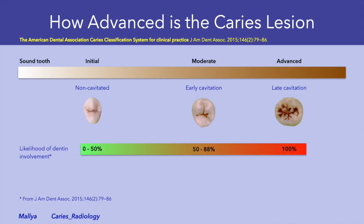Let's review the ADA caries classification system that categorizes caries as initial, moderate, and advanced according to the stage of progression. The initial caries lesion is non-cavitated and involves the enamel and the outer third of dentin. Importantly, up to 50% of such lesions could have involved the dentin, emphasizing the need for imaging to provide information that cannot be clinically determined. In moderate caries you have early cavitation, and in advanced caries you have late cavitation that extends through the enamel and dentin. In both situations, imaging provides an assessment of the depth of the caries lesion.